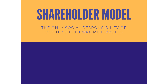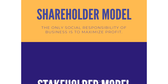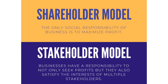Friedman's views represent only one of the two perspectives related to social responsibility. The second perspective is known as the stakeholder model, which states that businesses have a responsibility not only to seek profits but also to satisfy the interests of multiple stakeholders — individuals or groups that have an interest in the actions and behaviors of the business. The idea behind the stakeholder model is that business decision makers need to maintain a positive relationship with society and their environment if they are to operate effectively. Failure to do so can harm the business's reputation and ultimately affect their ability to operate.